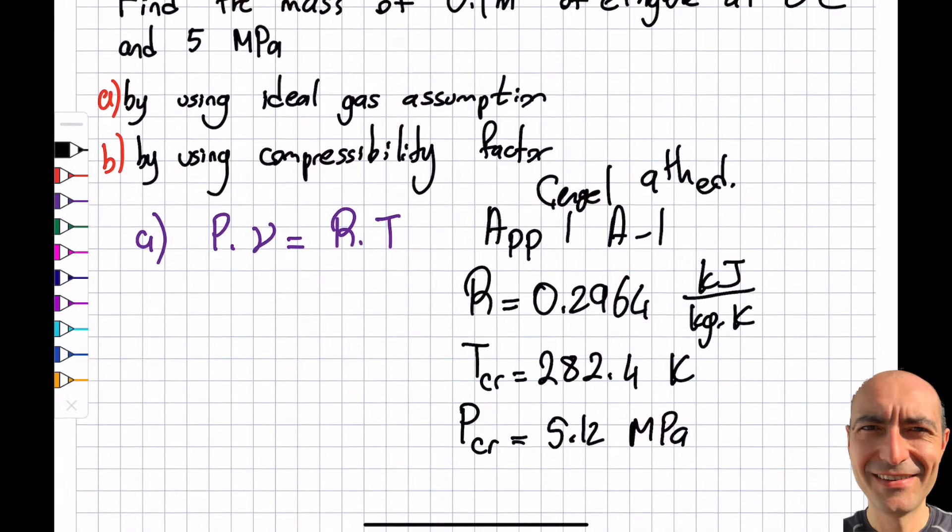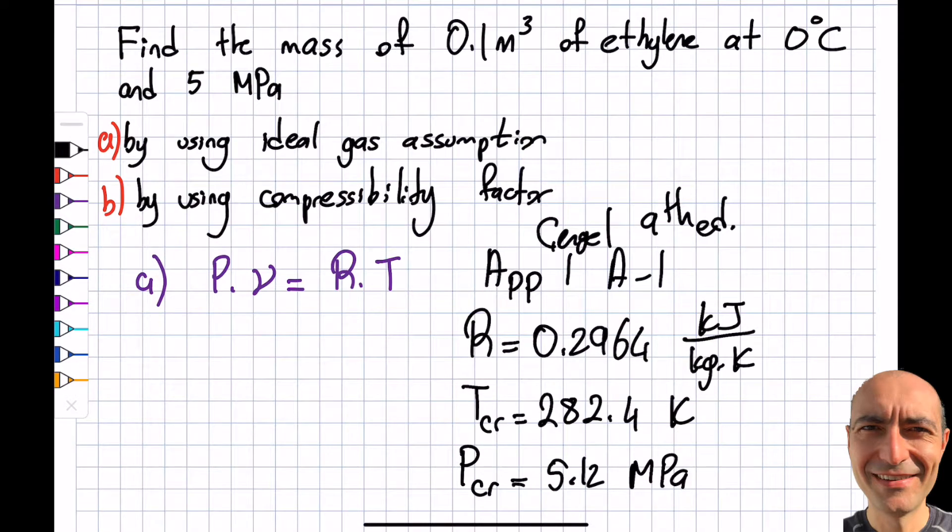The pressure is five megapascals, so in terms of pascals it's five million. Note that R is given in kilojoules, so I'm going to leave it as kilopascals. You have to be consistent, so I'll leave it as 5000 kilopascals.